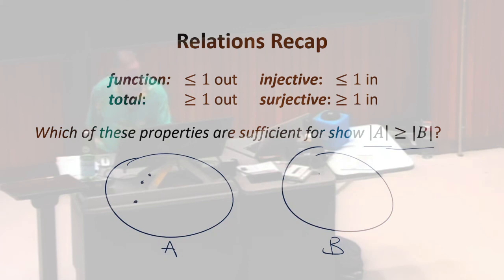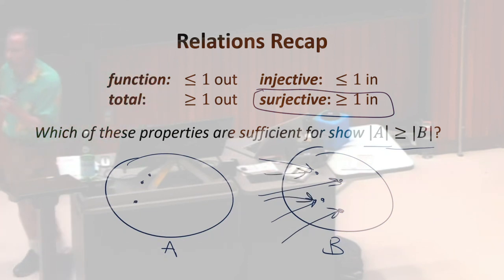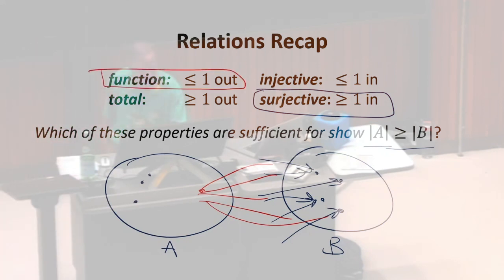We need surjective. We need at least one edge going into every element of B. But we could have some with more. And do we need anything else? Is surjective enough? We need a function. If we didn't have a function, we could have just one element of A with all of those edges out. So we need a function. That's the two things that we would need.